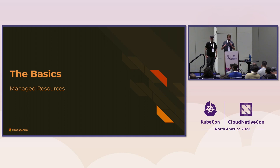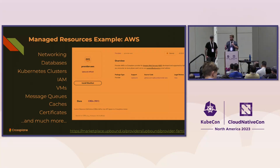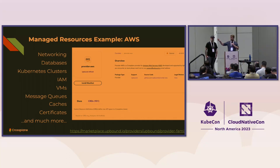Crossplane at its foundational layer is a way to manage resources in the cloud, on-premises, et cetera. You can represent entities or objects in the real world as resources within the control plane. For AWS, there are over 900 different resource types — networking, clusters, caches, databases — all represented in Crossplane as objects you can create and manipulate, and Crossplane goes out into the real world and makes it happen for you.